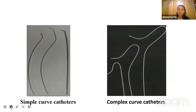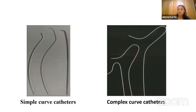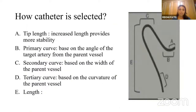There are two types of catheters. We can divide them basically into simple as well as complex ones. Simple catheters have one or two curves, as seen on the left-hand side. On the right side, there are complex curve catheters. There are various curves, and we will learn about the uses of each different type of catheter.